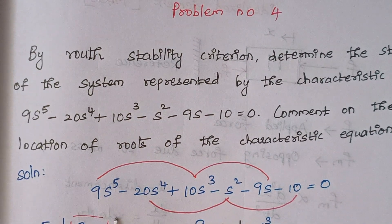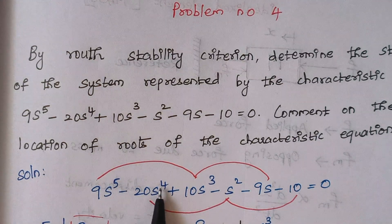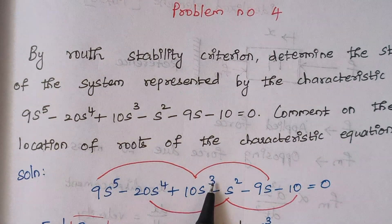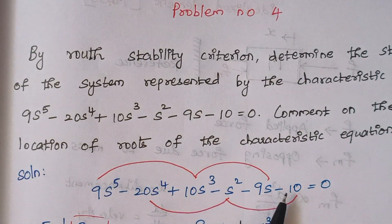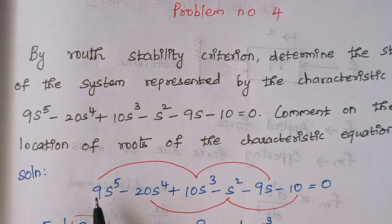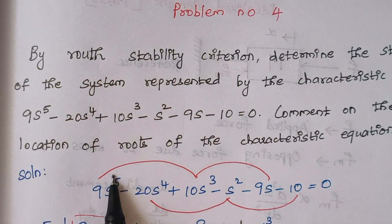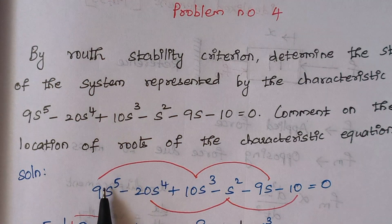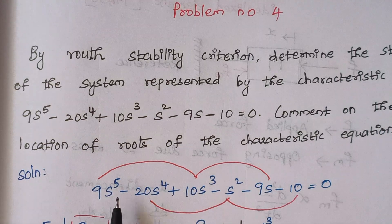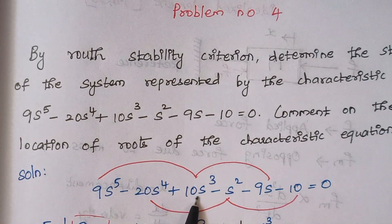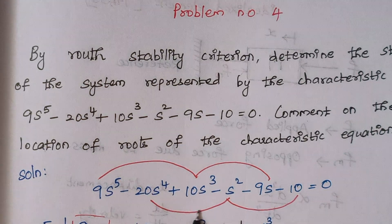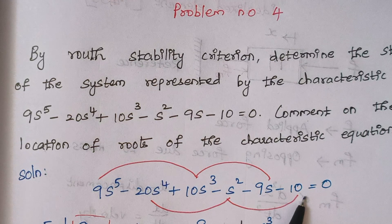The first step is to check whether all the powers are present in descending order. We have S^5, S^4, S^3, S^2, S^1, and S^0. The highest power is 5, which is odd. So we select the odd-power terms: S^5, S^3, and S^1, and the even-power terms: S^4, S^2, and S^0.